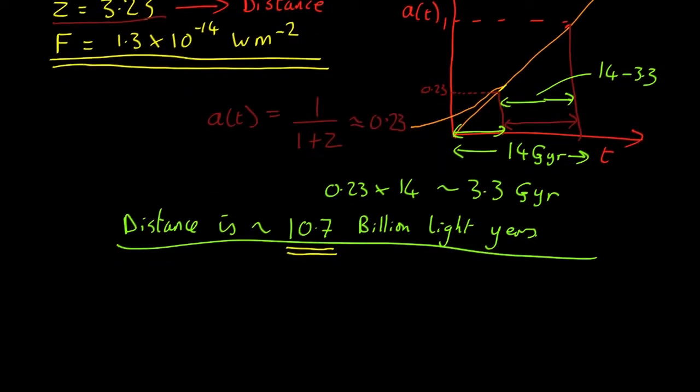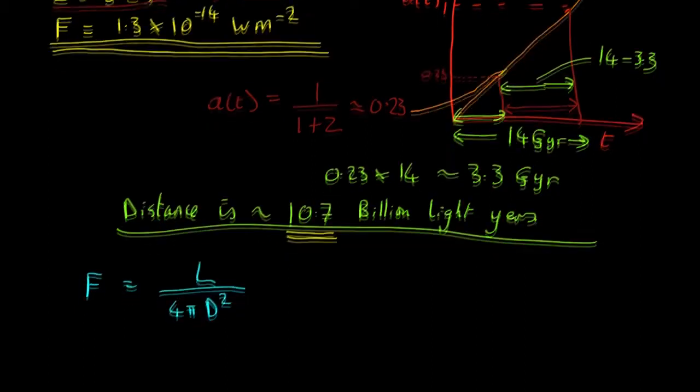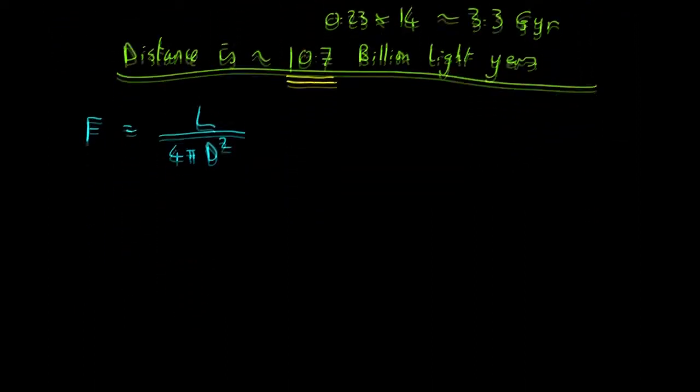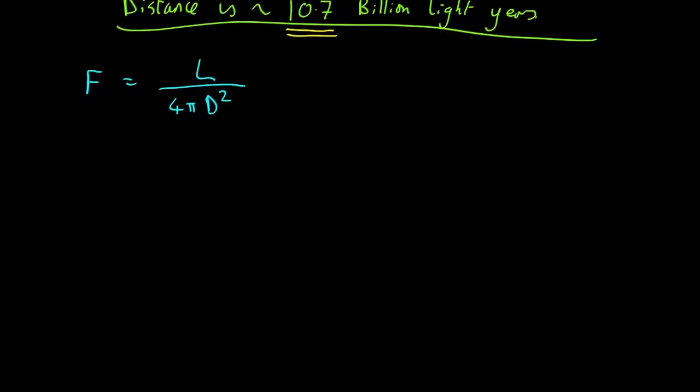Now let's work out the flux. Now you may remember the equation, the inverse square law, the flux from something is equal to its luminosity divided by 4 pi the distance squared. Now that's not quite right in cosmology. The trouble is, this is just assuming the light spreads out in all directions, so we had a source and light goes in all directions spread over a bigger and bigger sphere. But in cosmology, when space is expanding, there are two additional effects.